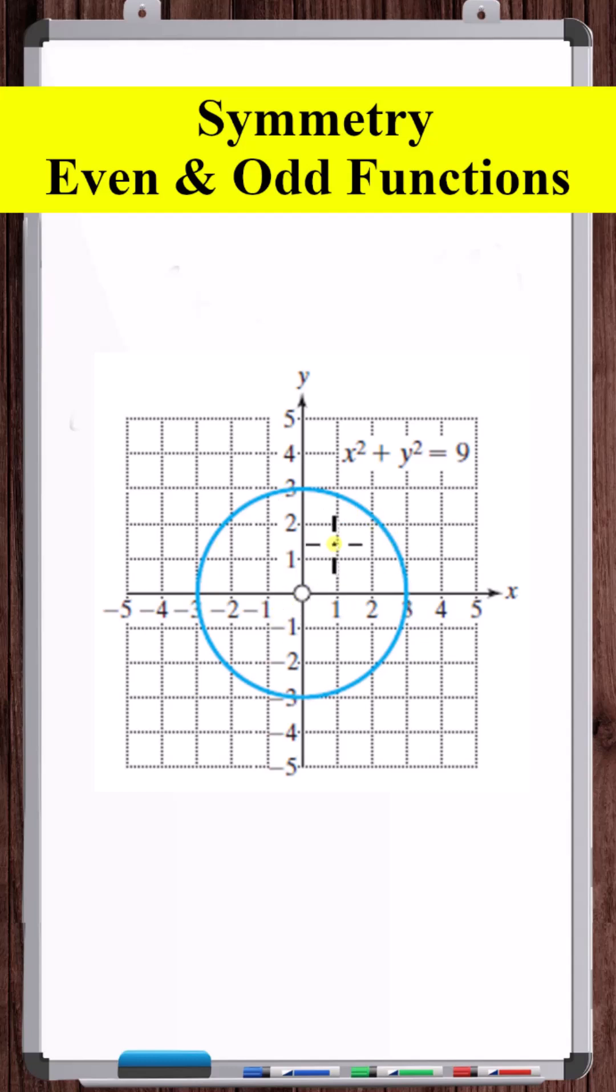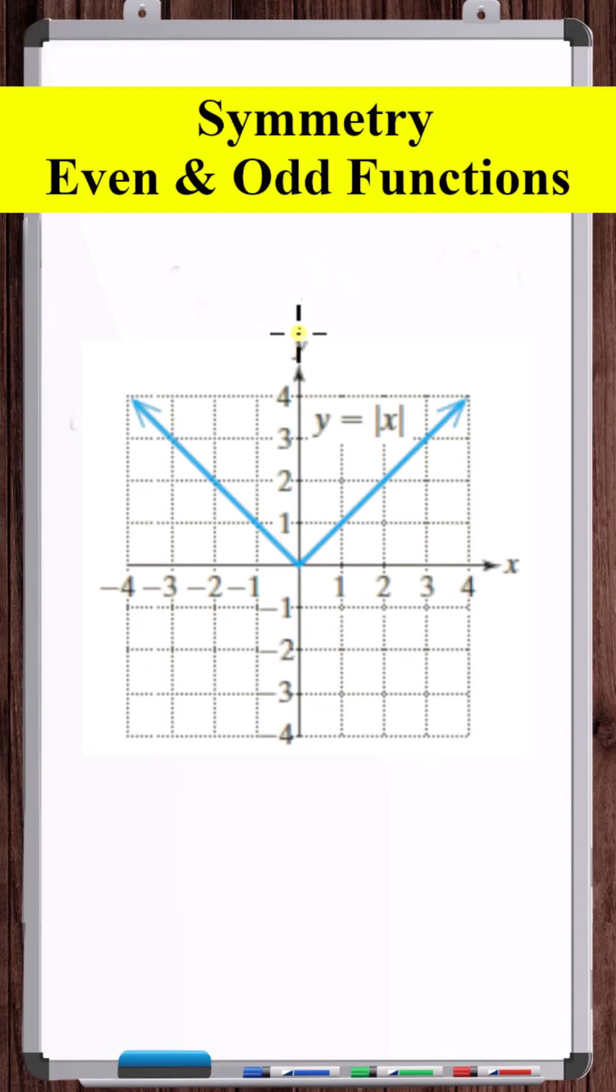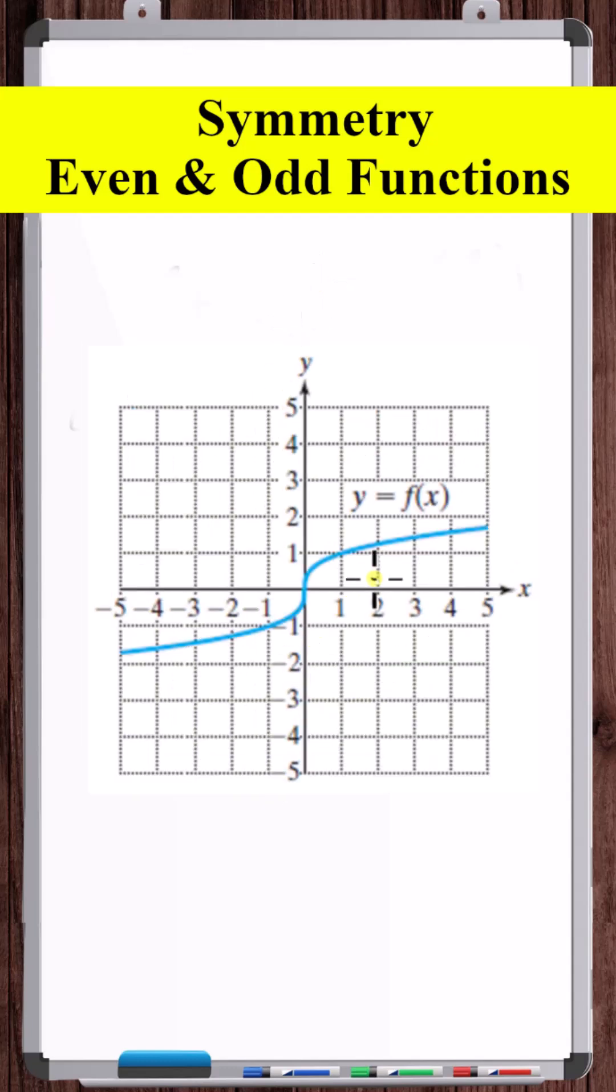By definition, functions can't be symmetric with respect to the x-axis. A function can be symmetric with respect to the y-axis, in which case it's an even function, or it can be symmetric with respect to the origin, in which case it's an odd function.